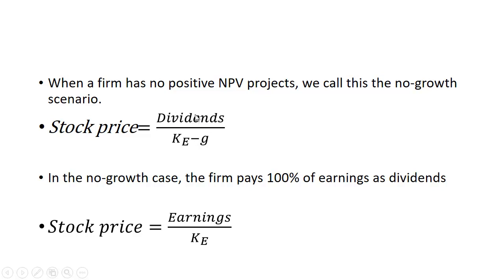Usually we use dividends one period into the future — that's actually the correct formula here. But this isn't growing, so G is equal to zero. And we're going to assume that in this no growth case, the firm pays out 100% of earnings as dividends. When the firm is growing, they usually retain some earnings to reinvest. But if the firm has nothing to invest in, theoretically they should just pay it all out in dividends.